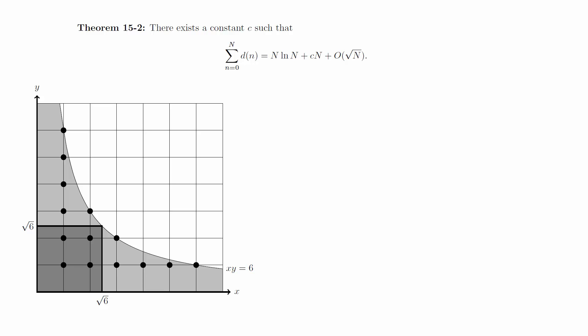This is the part that's shaded darker in this diagram. The other two connected regions are the other two parts. Notice that the symmetry of the equation implies that these lighter regions have the same number of lattice points. The lattice points in the square are easy to count. There are the floor of square root of n squared of them.